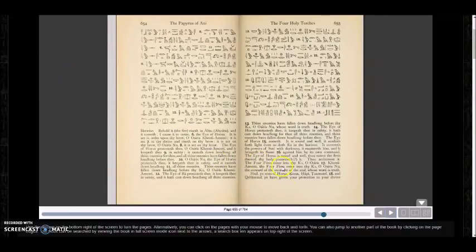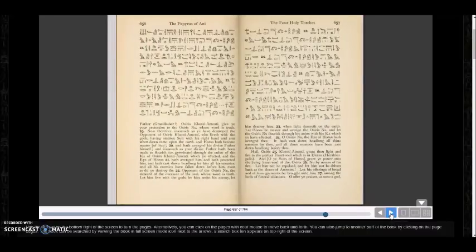It says, The four fires enter into thy Ka, O Osiris. And isn't that perfect? When these shafts come into these so-called symbolic tomb chambers, or burial chambers, but they are really symbolic of the Sol, or the Ka.